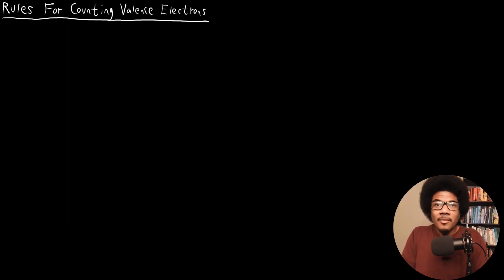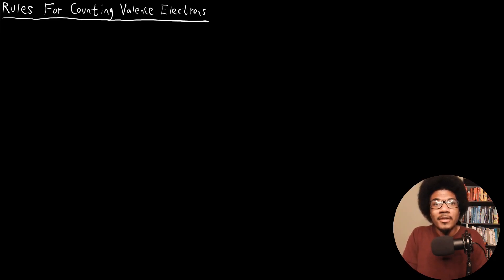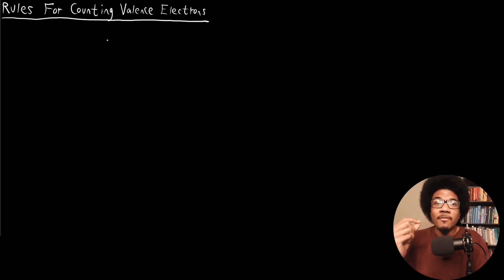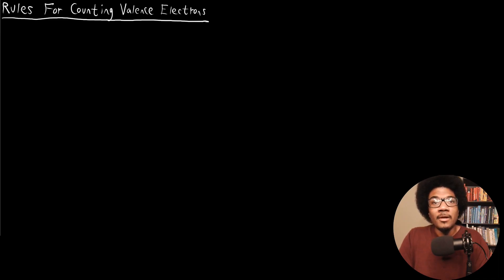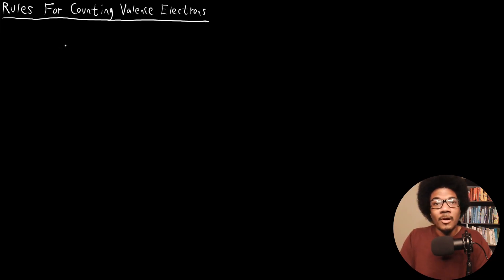In this video, I want to establish additional rules for counting valence electrons. In the previous video, we introduced valence electrons as the electrons in the outermost principal shell, and more importantly, the electrons that are involved in chemical bonding and establish the reactivity for atoms. These are going to be very important when we're discussing periodic trends, and a large part of the organization of the periodic table centers around reactivity and this configuration of valence electrons.